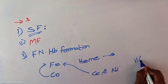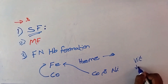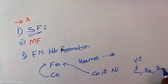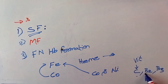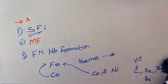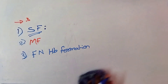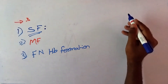The fifth factor is vitamins: Vitamin C, Vitamin B2, Vitamin B3, and Vitamin B6. Vitamin C is citric acid, Vitamin B2 is riboflavin, Vitamin B3 is nicotinic acid, and Vitamin B6 is pyridoxine. These are the factors necessary for the formation of hemoglobin.